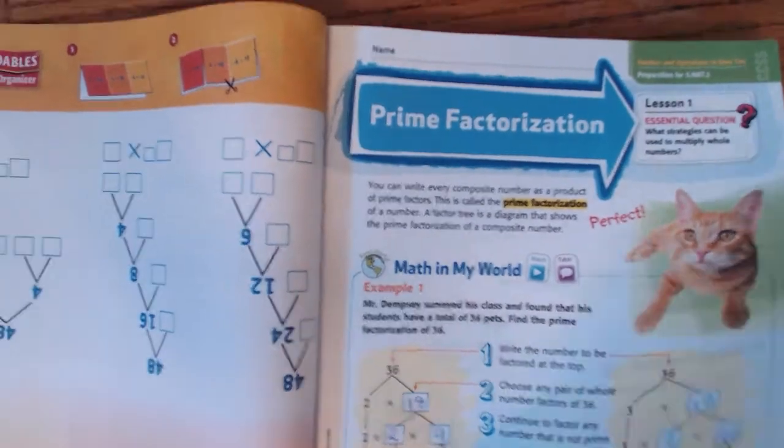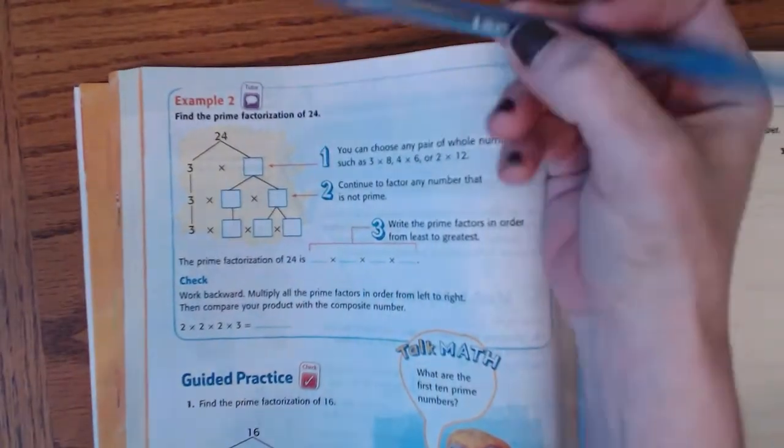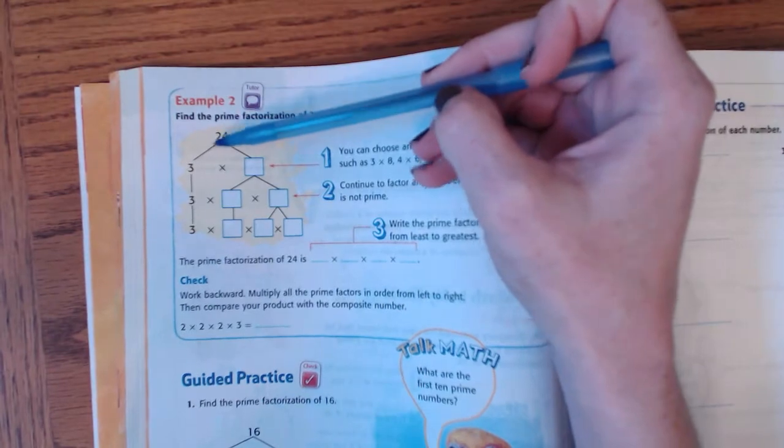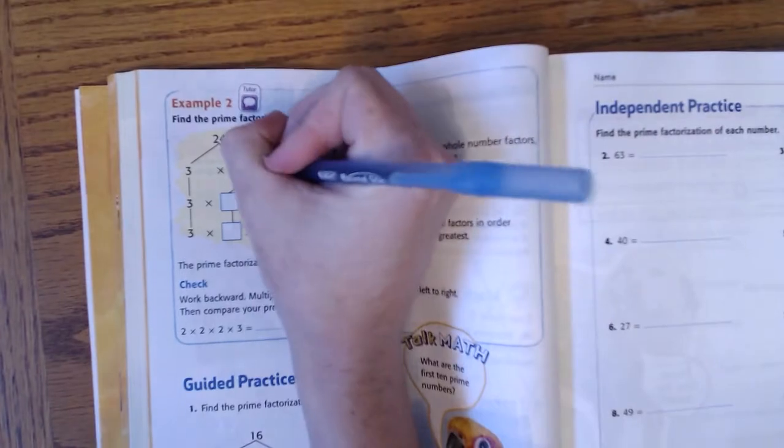All right, so let's flip our page. And here's another example. Here's 24. Now 24 can be broken down into 3 times what number? Well, that is 8.